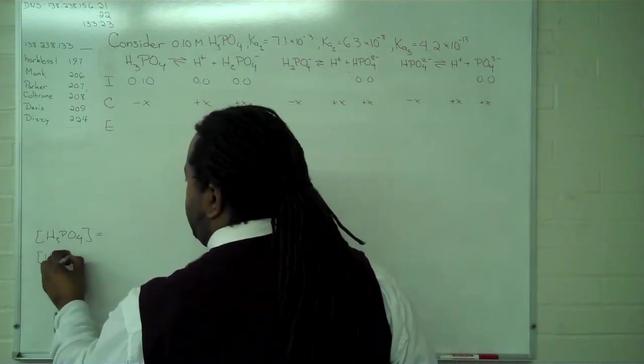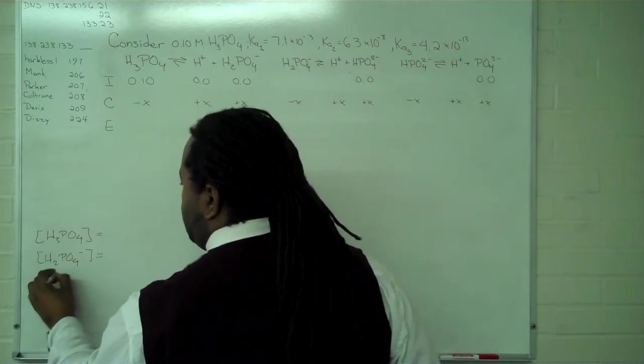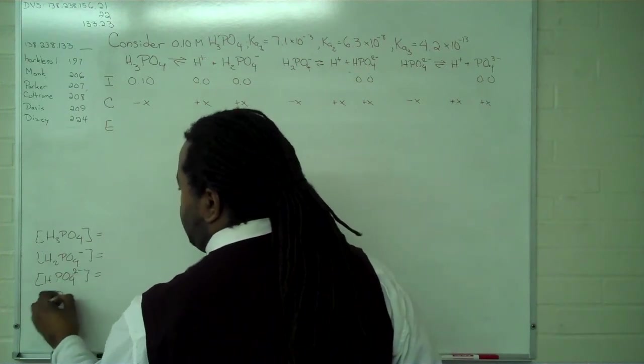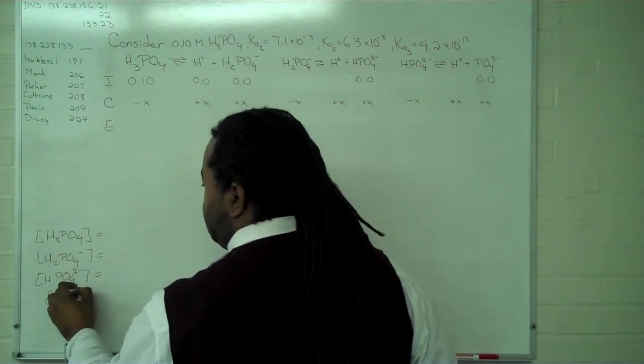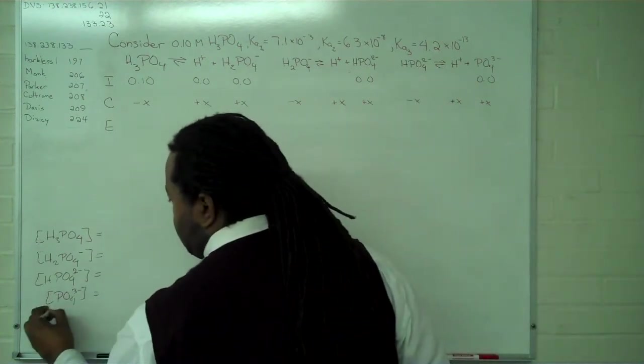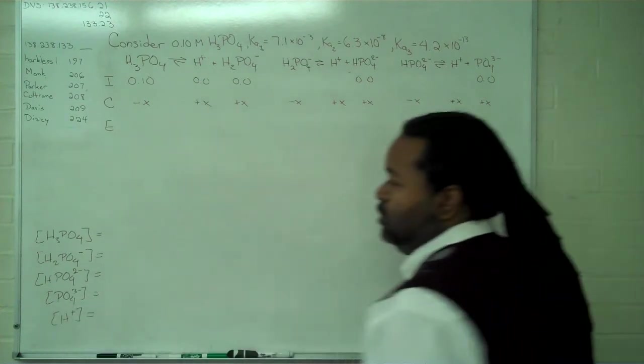So we'll carry on like this to get each of the individual steps until we have the completely bare phosphate ion. And once we have all of that, we can get the concentration of hydrogen.